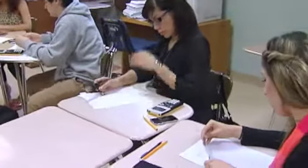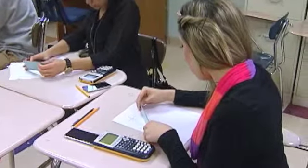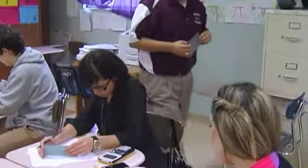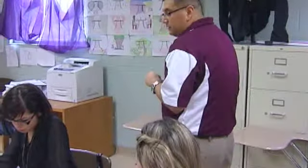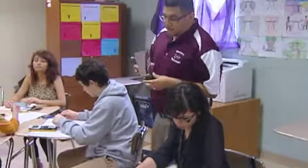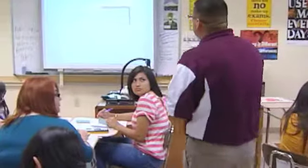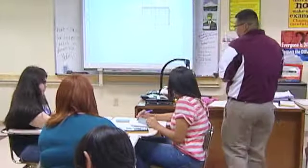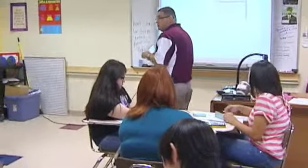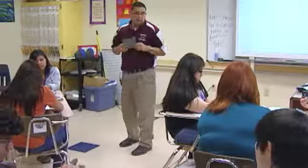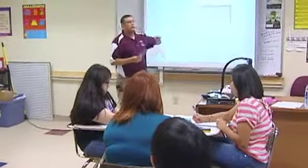Hold your mirror up against your graph and tell me what you see on number 11. You see the reflection on the other side. This mirror is actually representing the line y equals x. The graph of F-inverse is obtained by reflecting the graph of F — the original graph — across the line y equals x. And that's what this dashed line represents: the line y equals x.